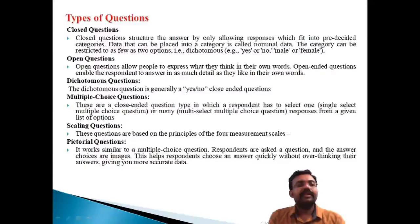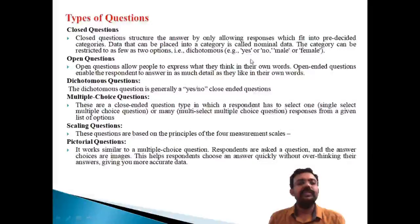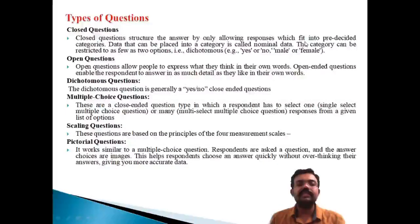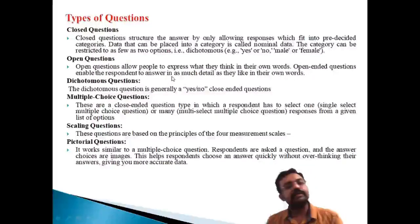What are the important types of questions associated with a questionnaire? The different types include: closed question, open question, dichotomous question, multiple choice question, scale question, and pictorial question. A closed question means there is a yes or no format — those are the only options. The closed question structures answers by limiting responses to pre-defined categories, for example yes or no.